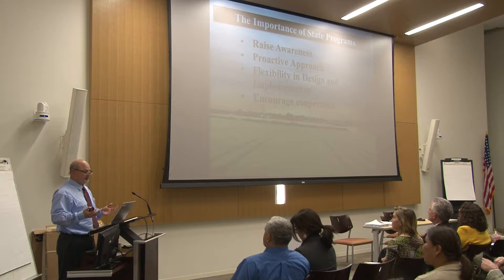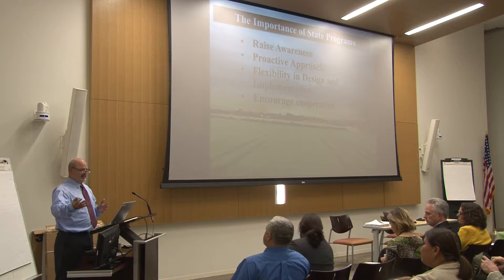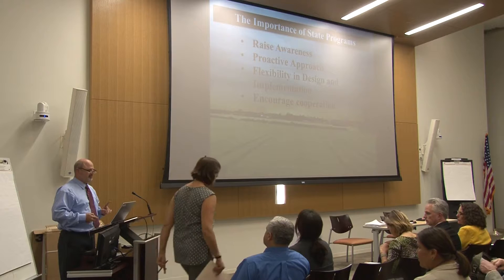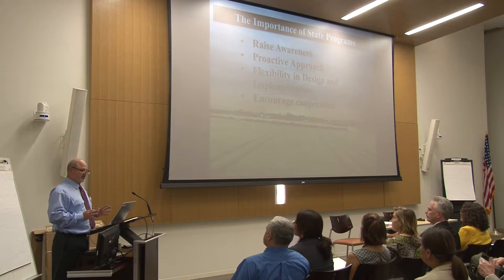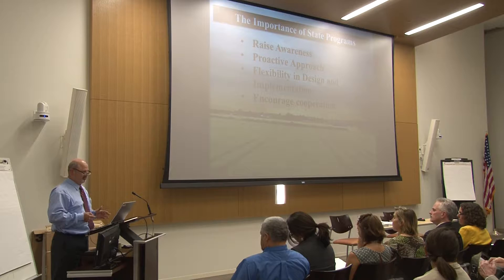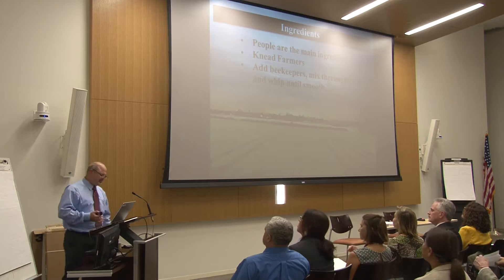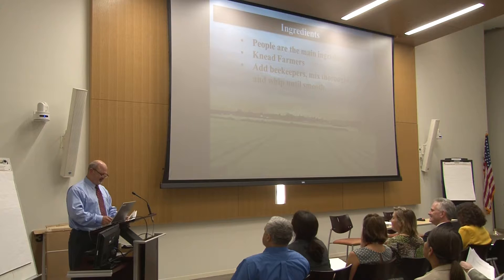We wanted to be proactive — we feel like we were early in the process. We knew our plan was going to have to be flexible, because to be honest we didn't know exactly what we were doing. We wanted flexibility in design and implementation so we could change it up if needed. But the main thing we wanted to do was foster the relationship between farmers and beekeepers. So — I'm from Mississippi — we're going to make gumbo today.